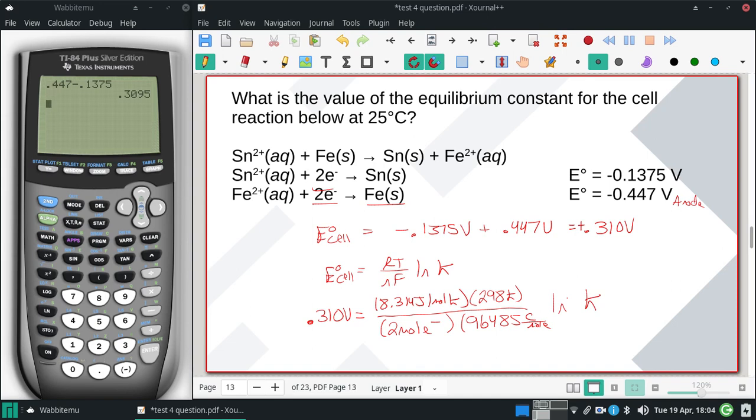Now we're going to go over to our calculator and solve for K. So I'm going to start with that value that's in there. Multiply it by 2 and by Faraday.